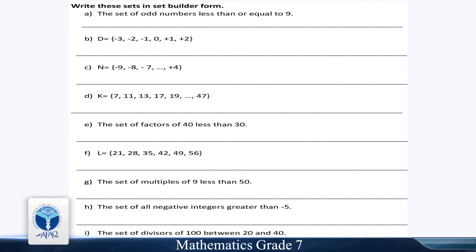C: N is equal to minus 9, minus 8, minus 7, so on up till plus 4. Part D: K = 11, 13, 17, 19, and so on up till 47.